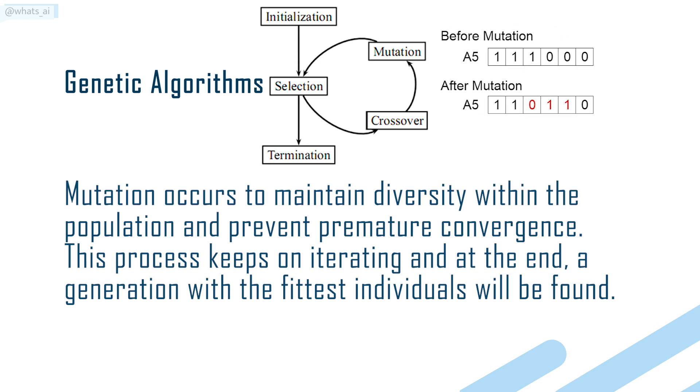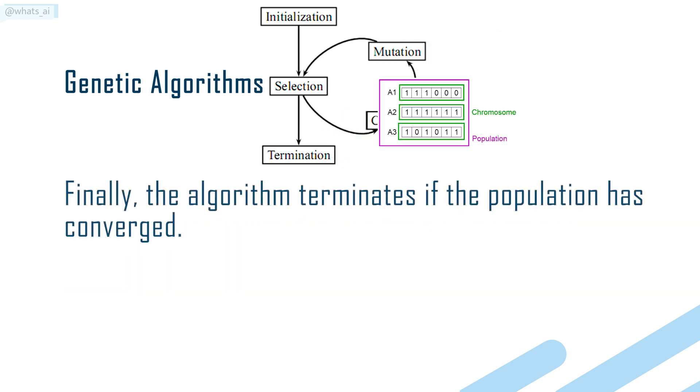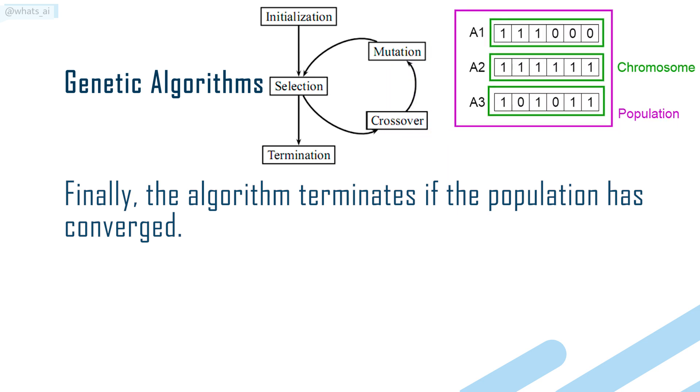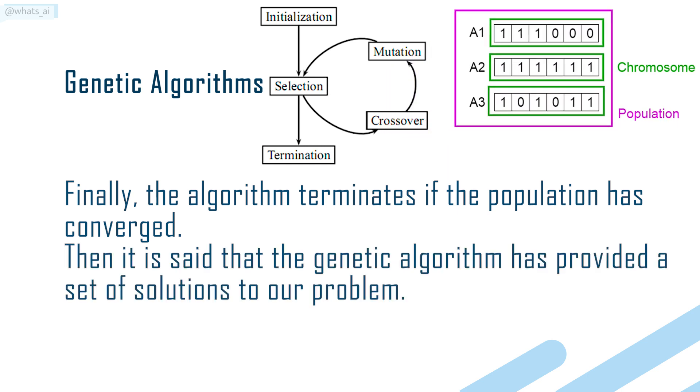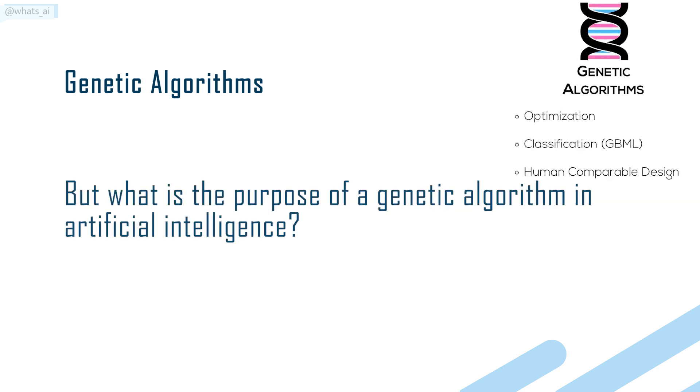This process keeps on iterating, and at the end, a generation with the fittest individuals will be found. Finally, the algorithm terminates if the population has converged. Then it is said that the genetic algorithm has provided a set of solutions to our problem. But what is the purpose of a genetic algorithm in artificial intelligence?